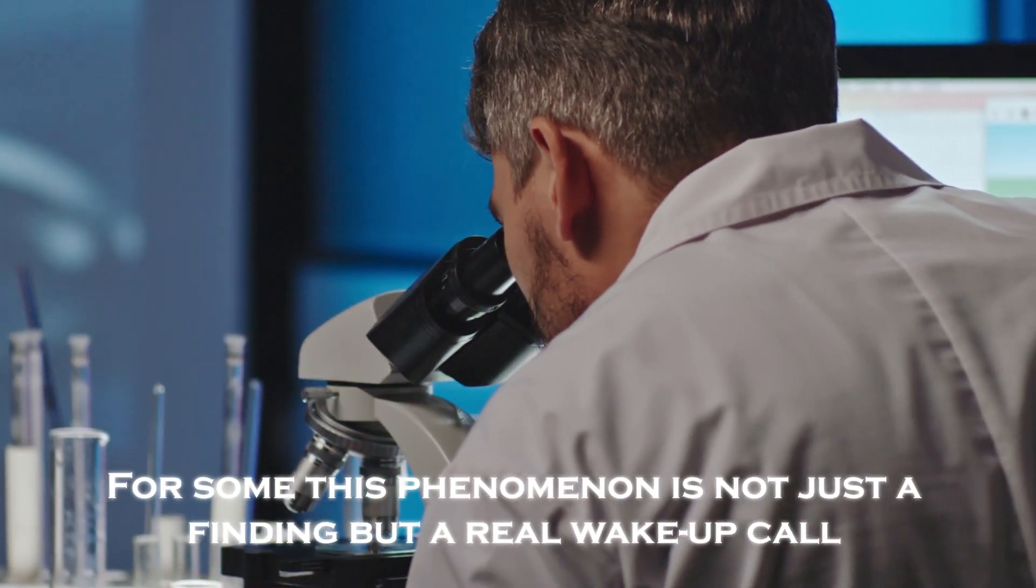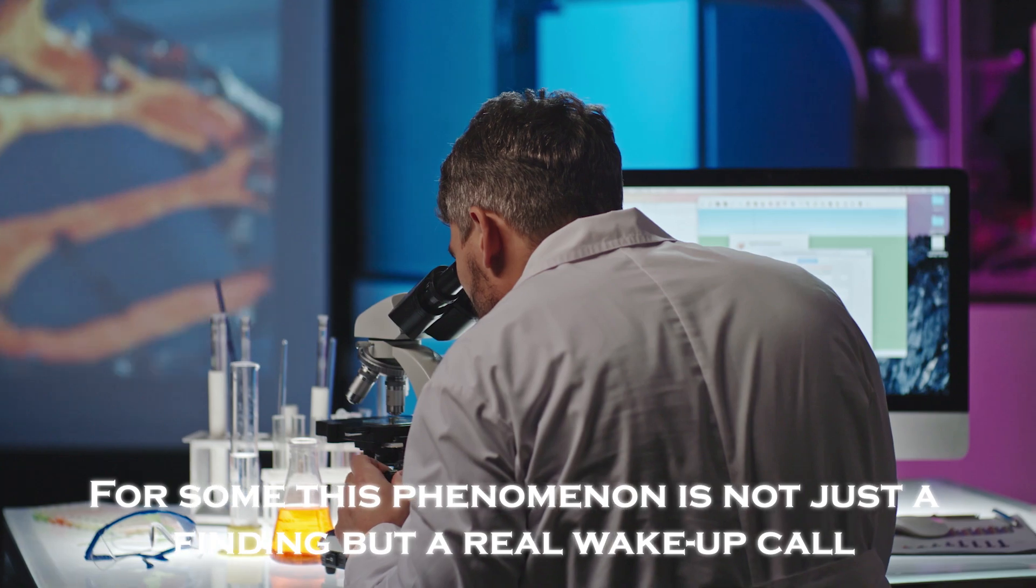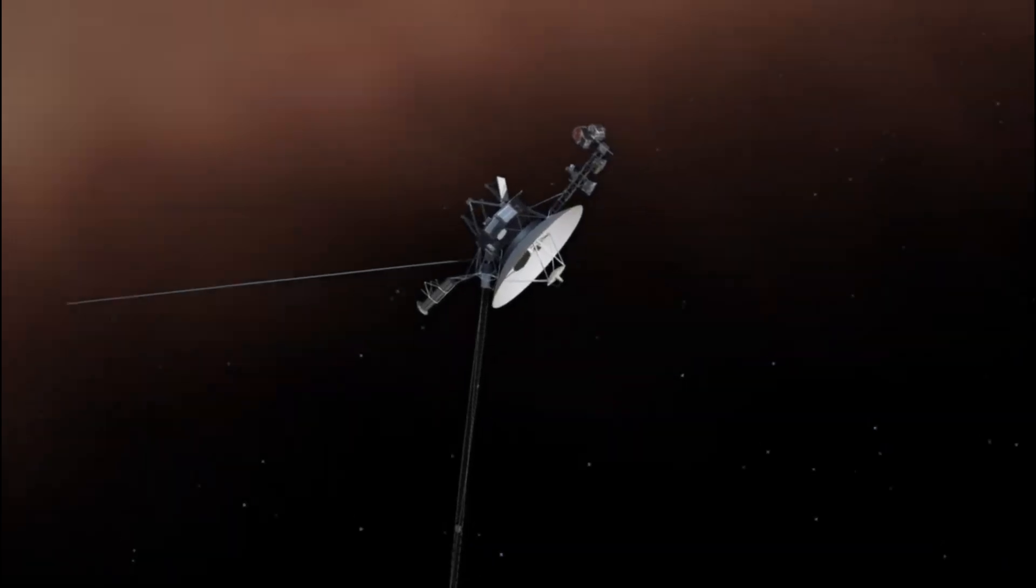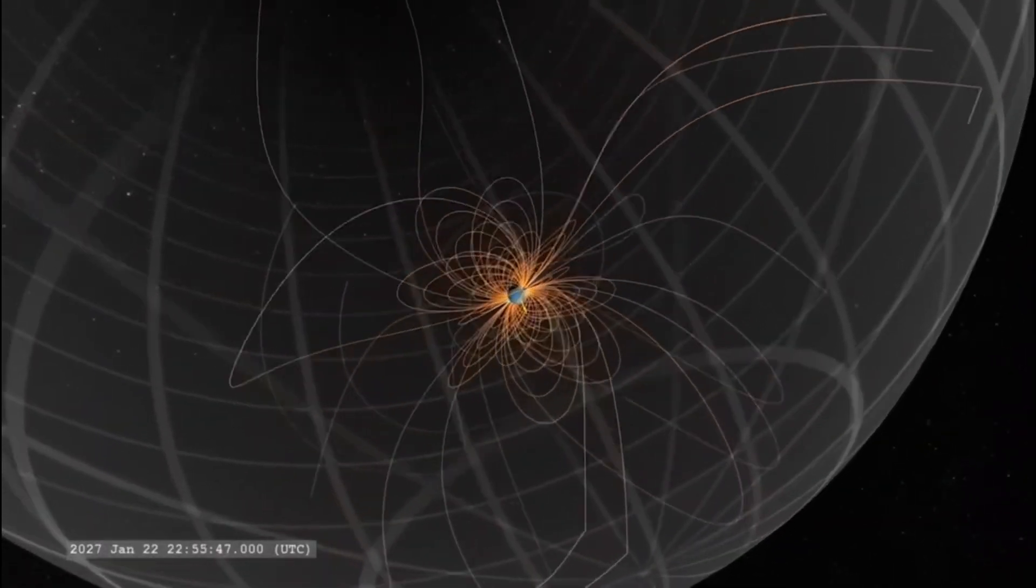For some scientists, this phenomenon is not just a finding, but a real wake-up call. Voyager 1 may be discovering an energy grid or something similar at the edge of our solar system.